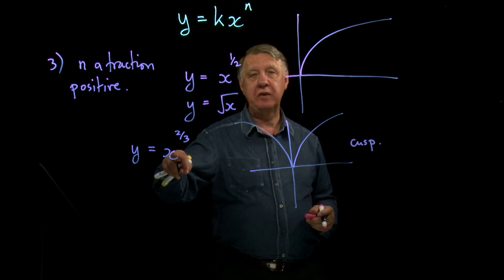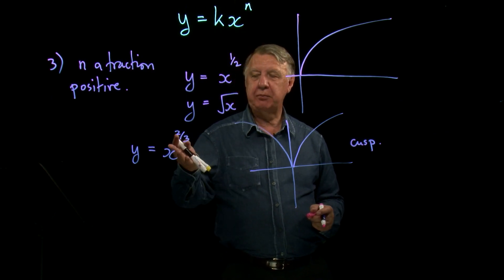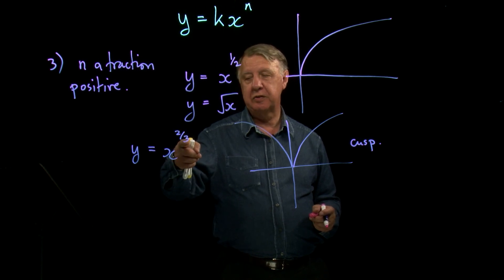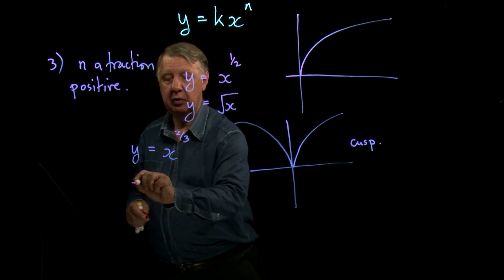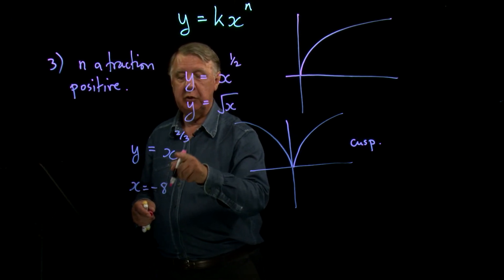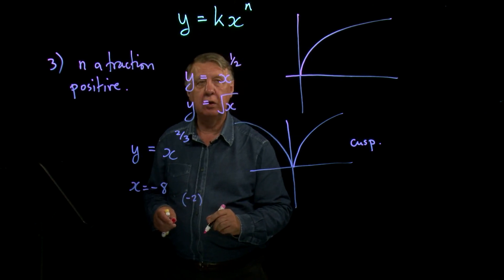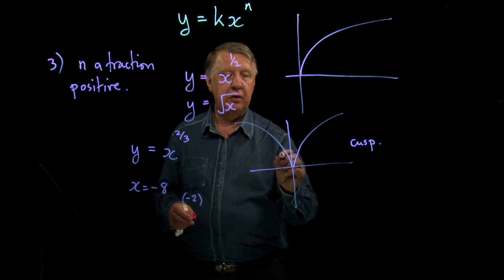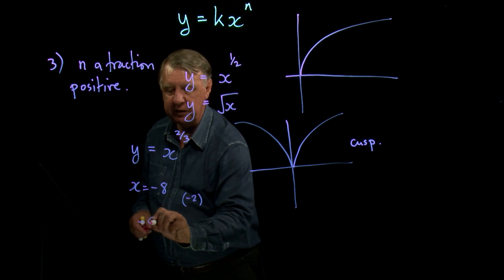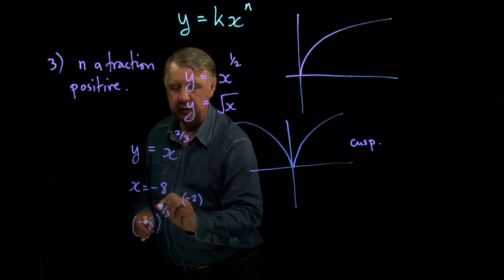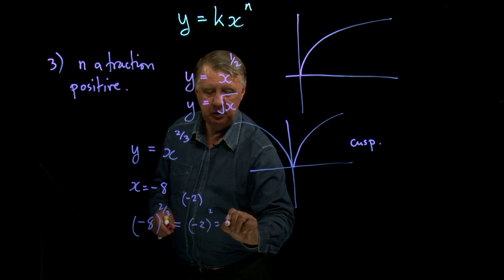And if x is negative, then what does this tell us to do? Well, some people would argue that x to the two thirds means the cube root answer squared. So if you had x that was negative eight, then the cube root of negative eight is negative two. And if you square it, you get the answer of four. So I think that's the best way to look at this. So if x is negative eight, we have negative eight to the two thirds, which is negative two squared, which is four.